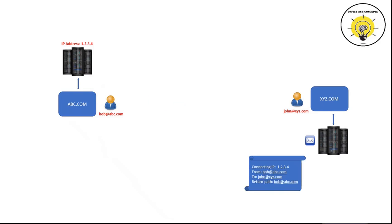The recipient server will try to find if this particular email is a legitimate email or not. But the question is: how will the recipient server trust this email? How will it verify if the sender is the actual owner of the abc.com domain, or if IP address 1.2.3.4 is actually the IP address of the sender's email server?